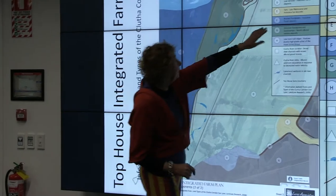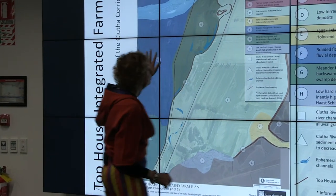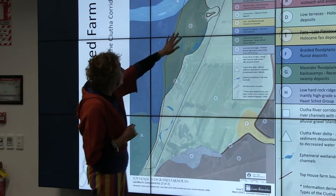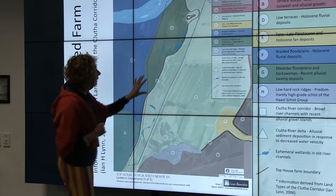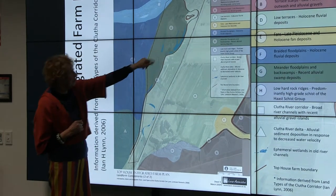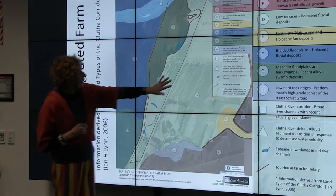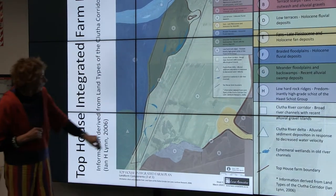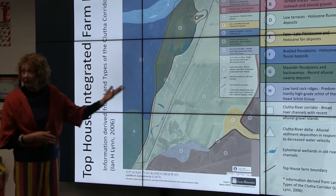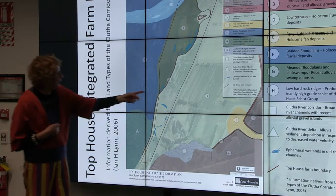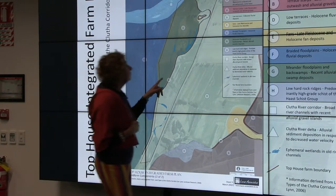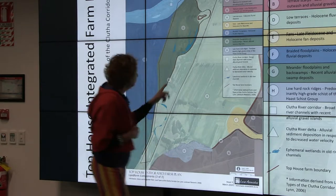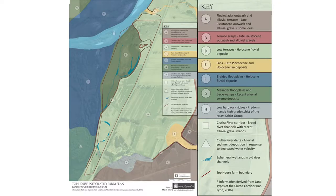That's mapped there as a braided floodplain, here's the meander floodplain and back swamps with all these ephemeral wetlands coming through, and here with the low terraces. It just makes it easy — and then you've got these scarps, the terrace scarps. It makes sense of the land with a typology.